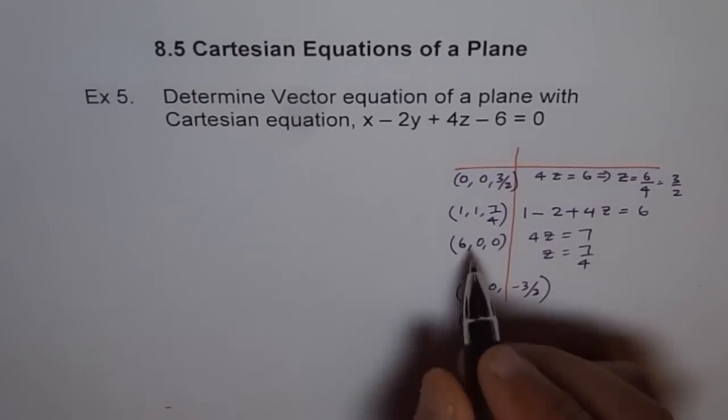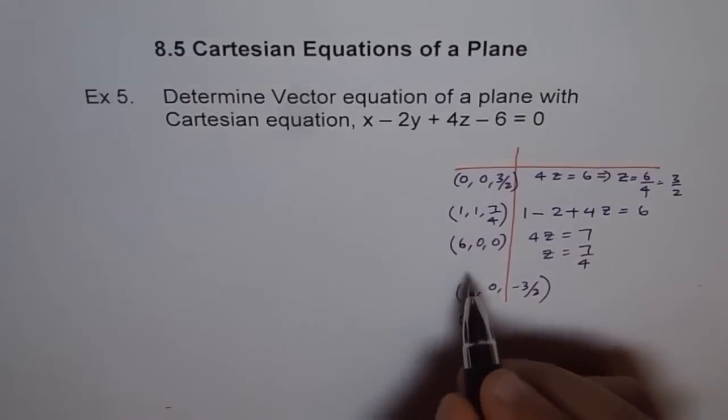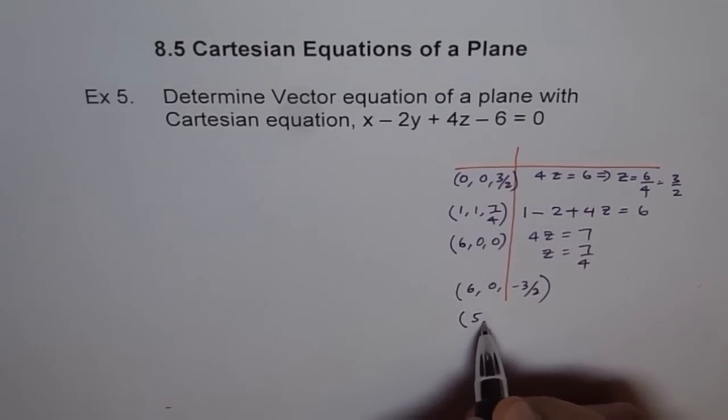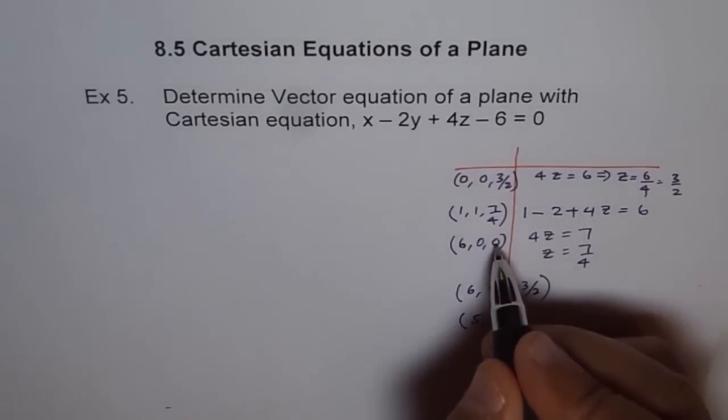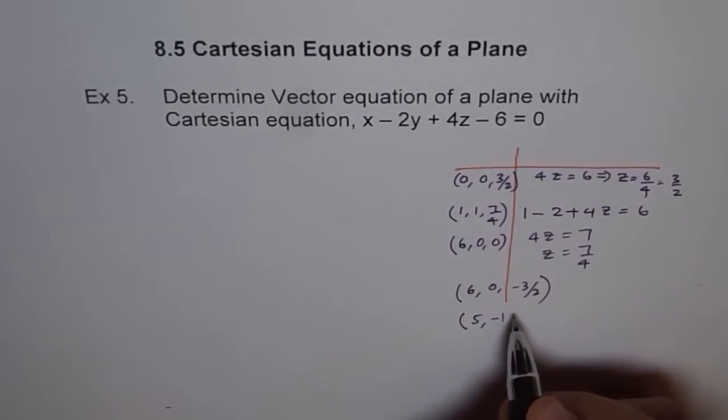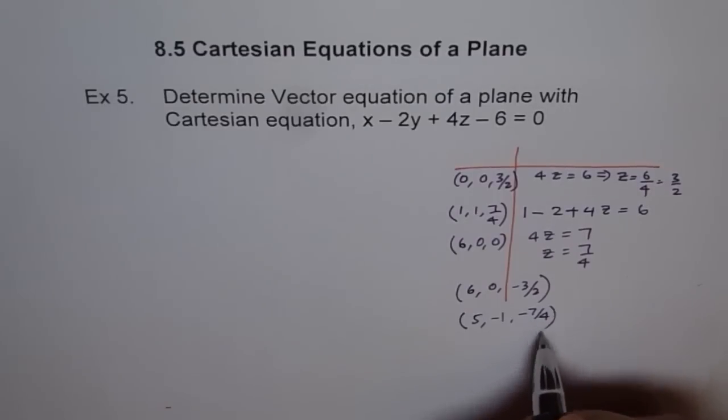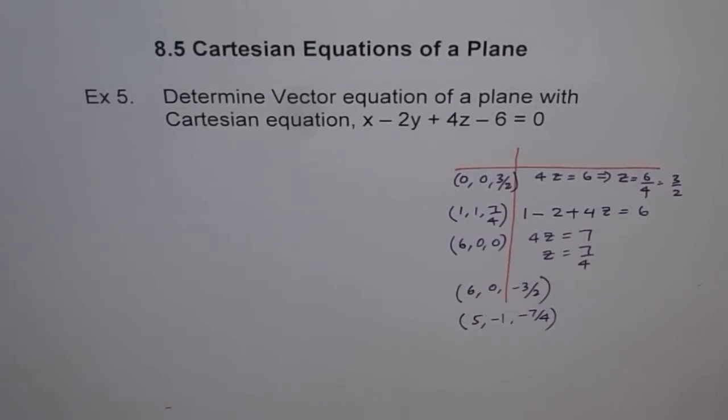The other vector is 6 minus this. Let us take 6 minus this is 5, and 0 minus 1 is minus 1, and 0 minus 7 over 4 is minus 7 over 4. So, these are our two direction vectors.